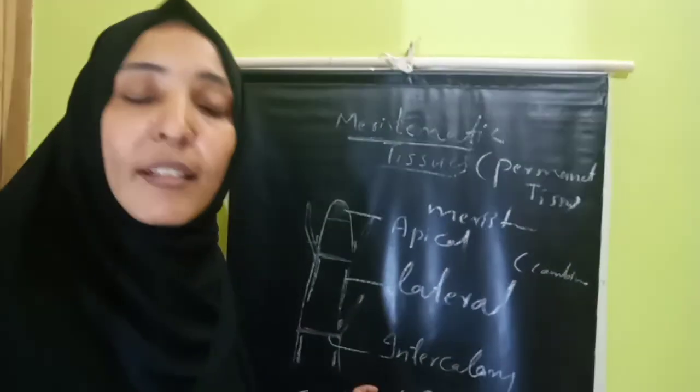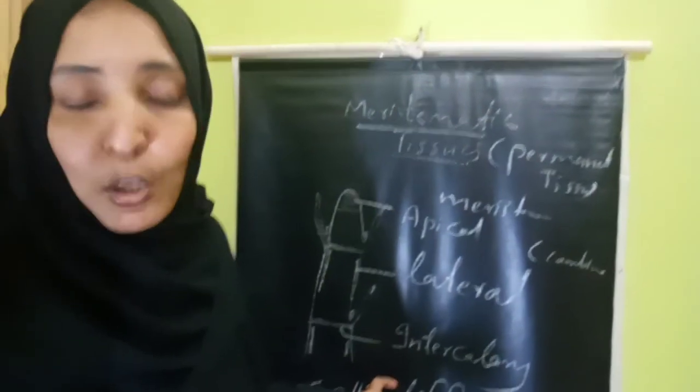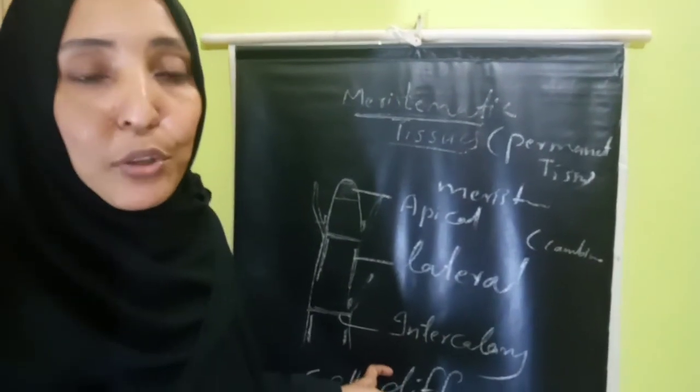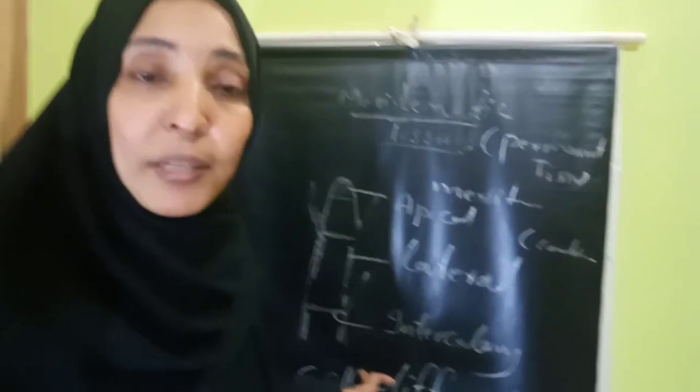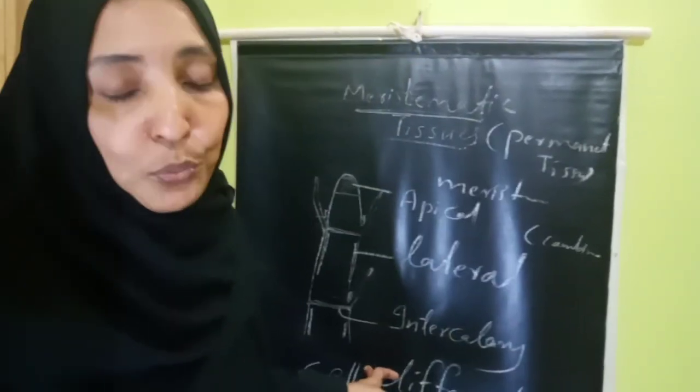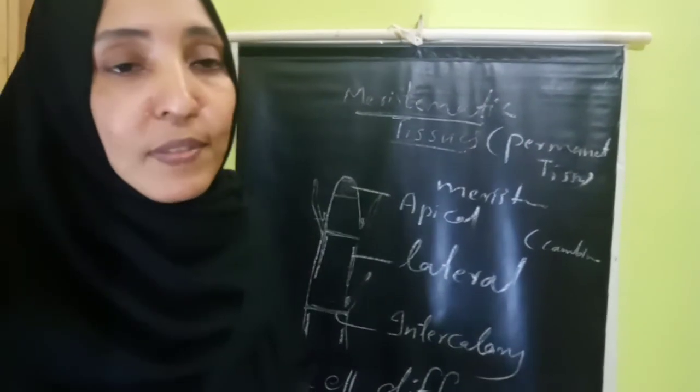With the help of this diagram, we can study more easily about the location and function of the three types of meristematic tissue. The remaining we will discuss in the next class.